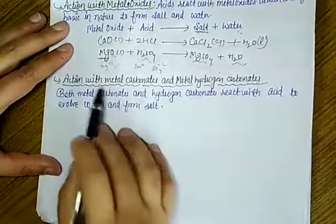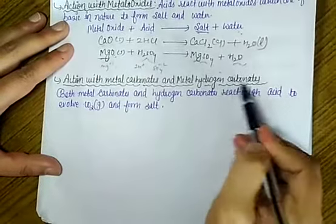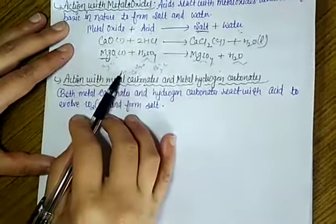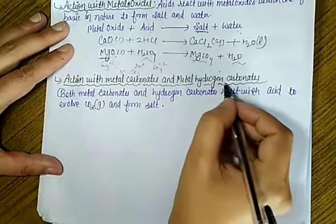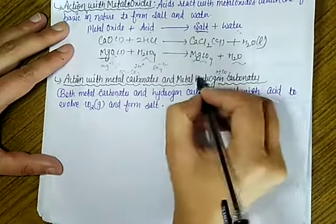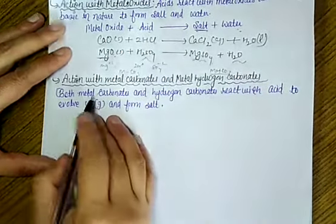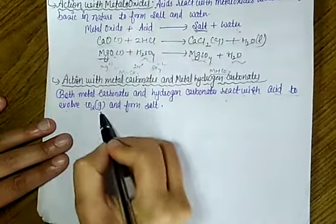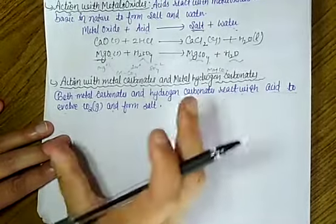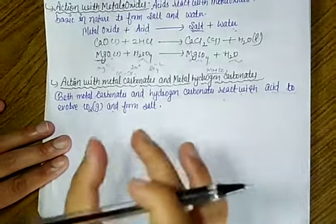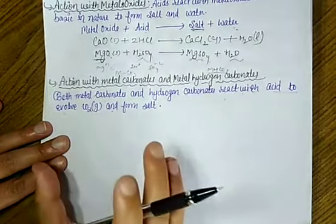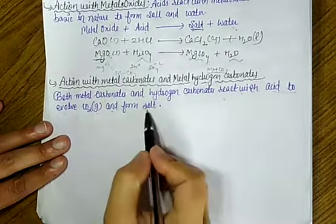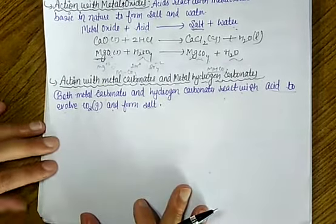Next is action with metal carbonates and metal hydrogen carbonates. Metal carbonates means a metal with a carbonate CO₃ group attached. Hydrogen carbonate or bicarbonate means hydrogen plus CO₃ type of metal. Both metal carbonates and hydrogen carbonates react with acid to evolve CO₂ gas and form salt. Remember, when you react with carbonate or hydrogen carbonate, it will release CO₂ gas.